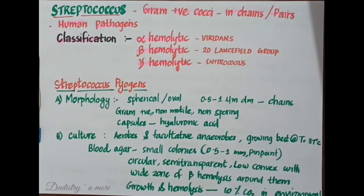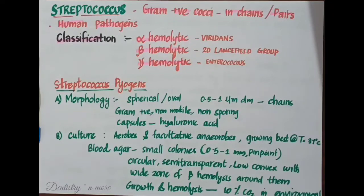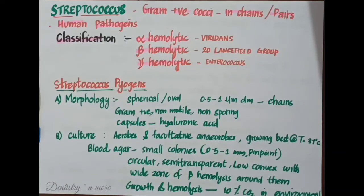Beta hemolytic Streptococci produce a clear, colorless zone of complete hemolysis. The erythrocytes are completely lysed, and this complete lysis is mainly due to the production of two types of Streptolysins: Streptolysin O and Streptolysin S. An example of this category is Streptococcus pyogenes.